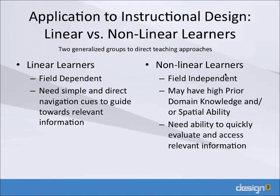Linear learners don't want to spend time figuring out where to go next. For nonlinear learners, they're probably field independent, though some field dependent learners with high prior domain knowledge or spatial ability might also benefit from nonlinear interaction. Nonlinear learners also need some kind of organization — if information is just out in a giant cloud, that's not really helpful. Annotated links are a way to achieve that, where a student can evaluate on the spot whether a link to a new module is going to serve what they're trying to learn.